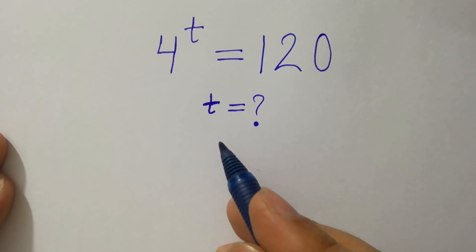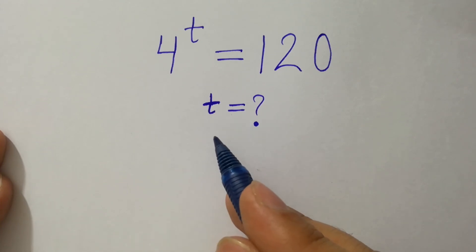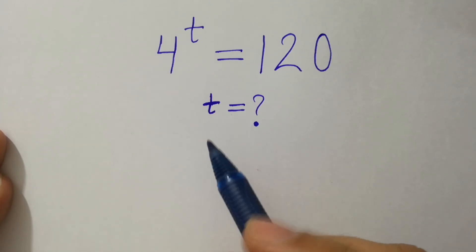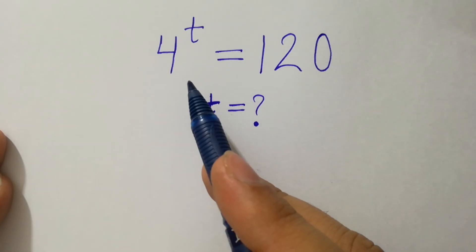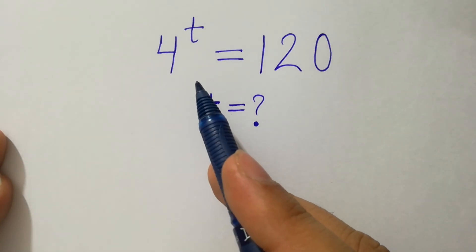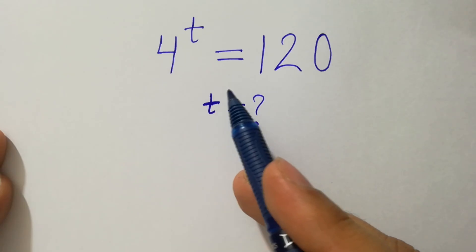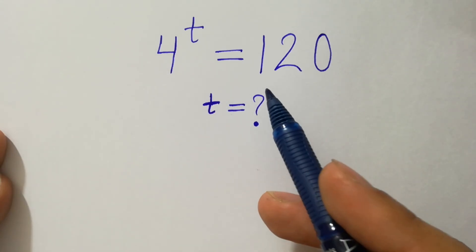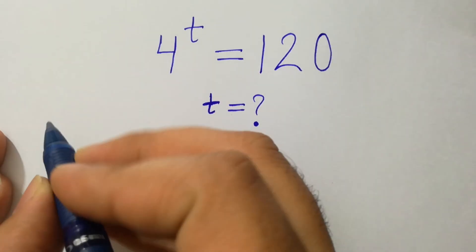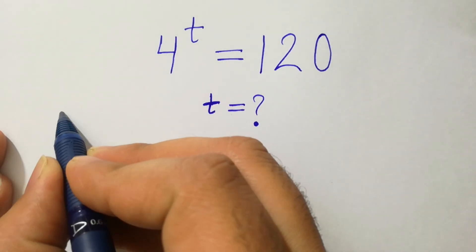Hello friends, find the value of t if 4 to the power t equals 120. Let's have a solution.